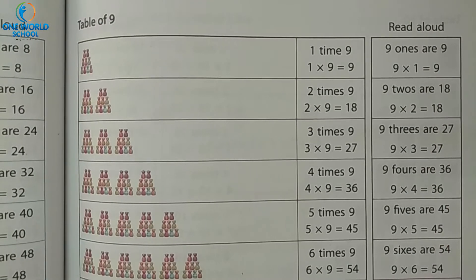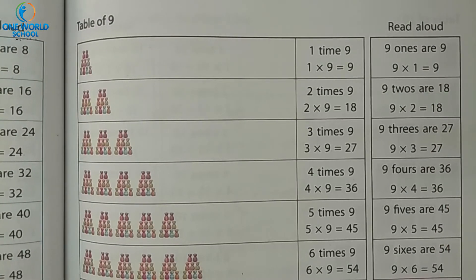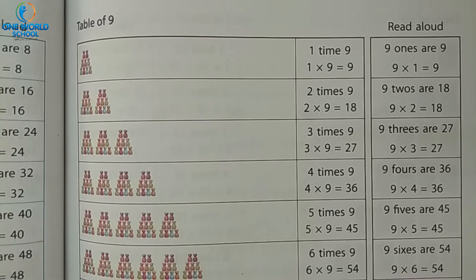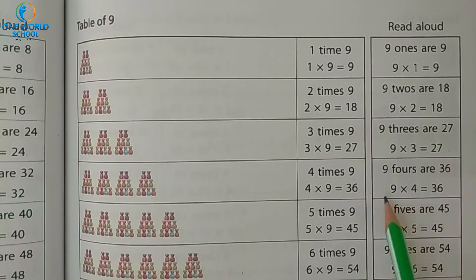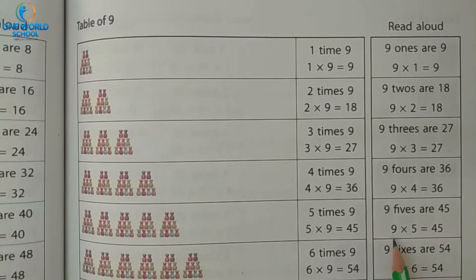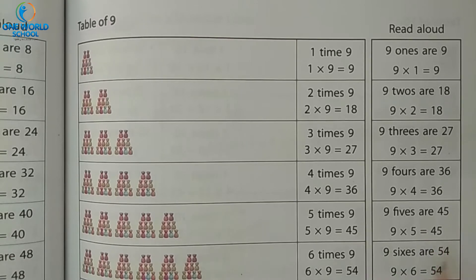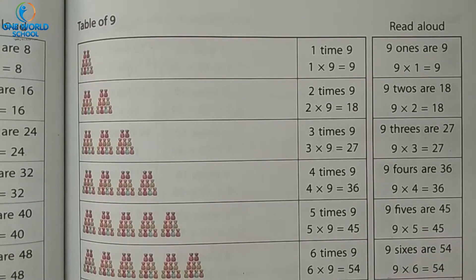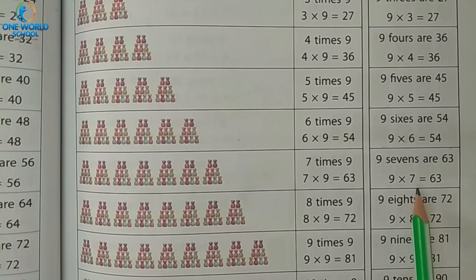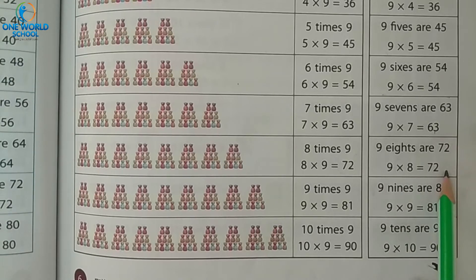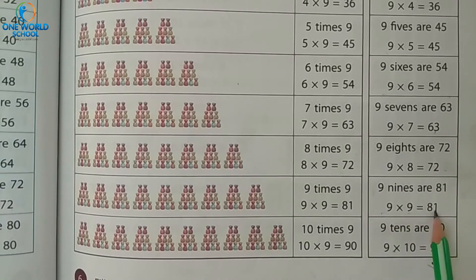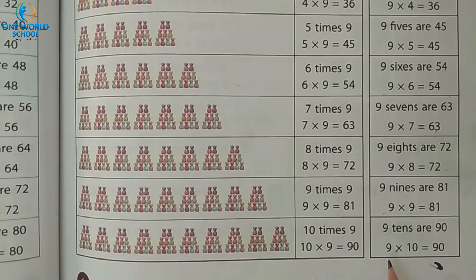Now table of 9. You all will repeat with me. 9 ones are 9. 9 twos are 18. 9 threes are 20. 9 fours are 37 — 9 fours are 36. Then 5 times 9: 9 fives are 45. 9 sixes are 54. 9 sevens are 63. 9 eights are 74. 9 nines are 81. 9 tens are 90.